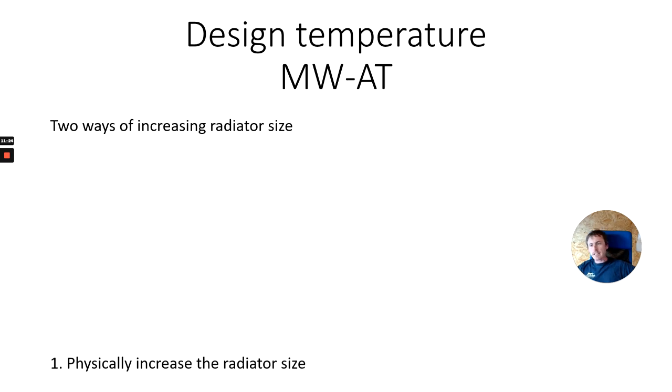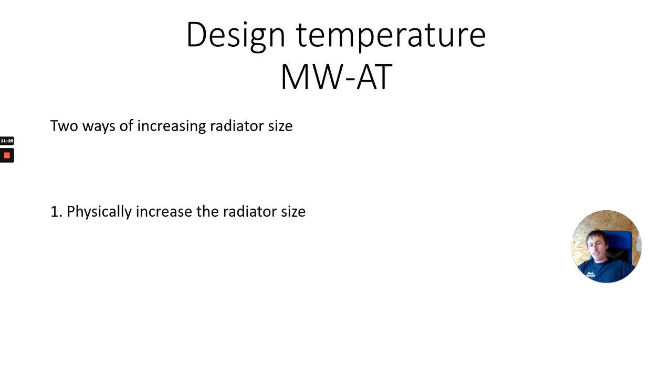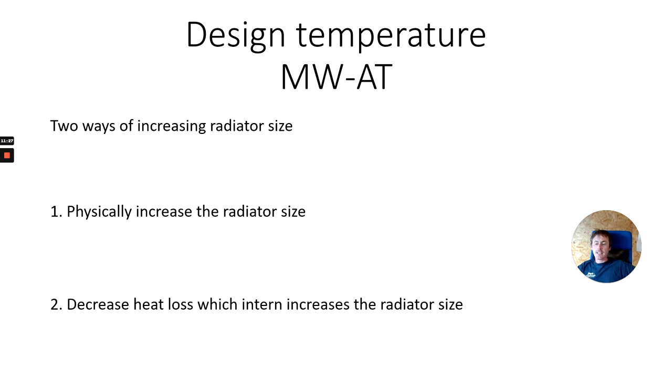There are two ways of increasing radiator output: physically increase the radiator size, or decrease the heat loss — which in turn allows a smaller radiator — by improving insulation.